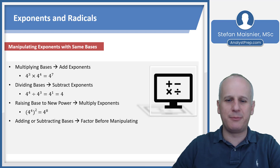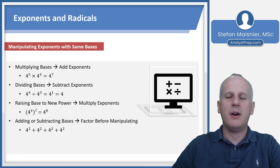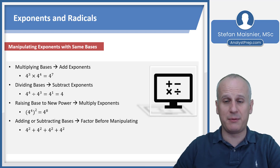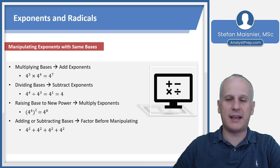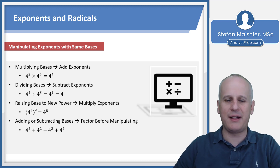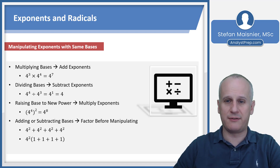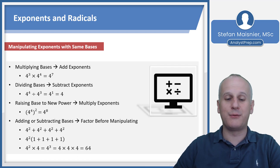If you're adding or subtracting bases, you must factor before manipulating. A common mistake is looking at 4 squared plus 4 squared plus 4 squared plus 4 squared and thinking that's 4 to the 8th by adding exponents — that is not accurate because exponents indicate multiplication, not addition. Factor out the greatest common value, which is 4 squared. Each term contributes a coefficient of 1, and adding those four 1s gives 4, so you have 4 squared times 4, which equals 4 to the 3rd, or 64. Verify: 16 plus 16 is 32, plus 16 is 48, plus 16 is 64.